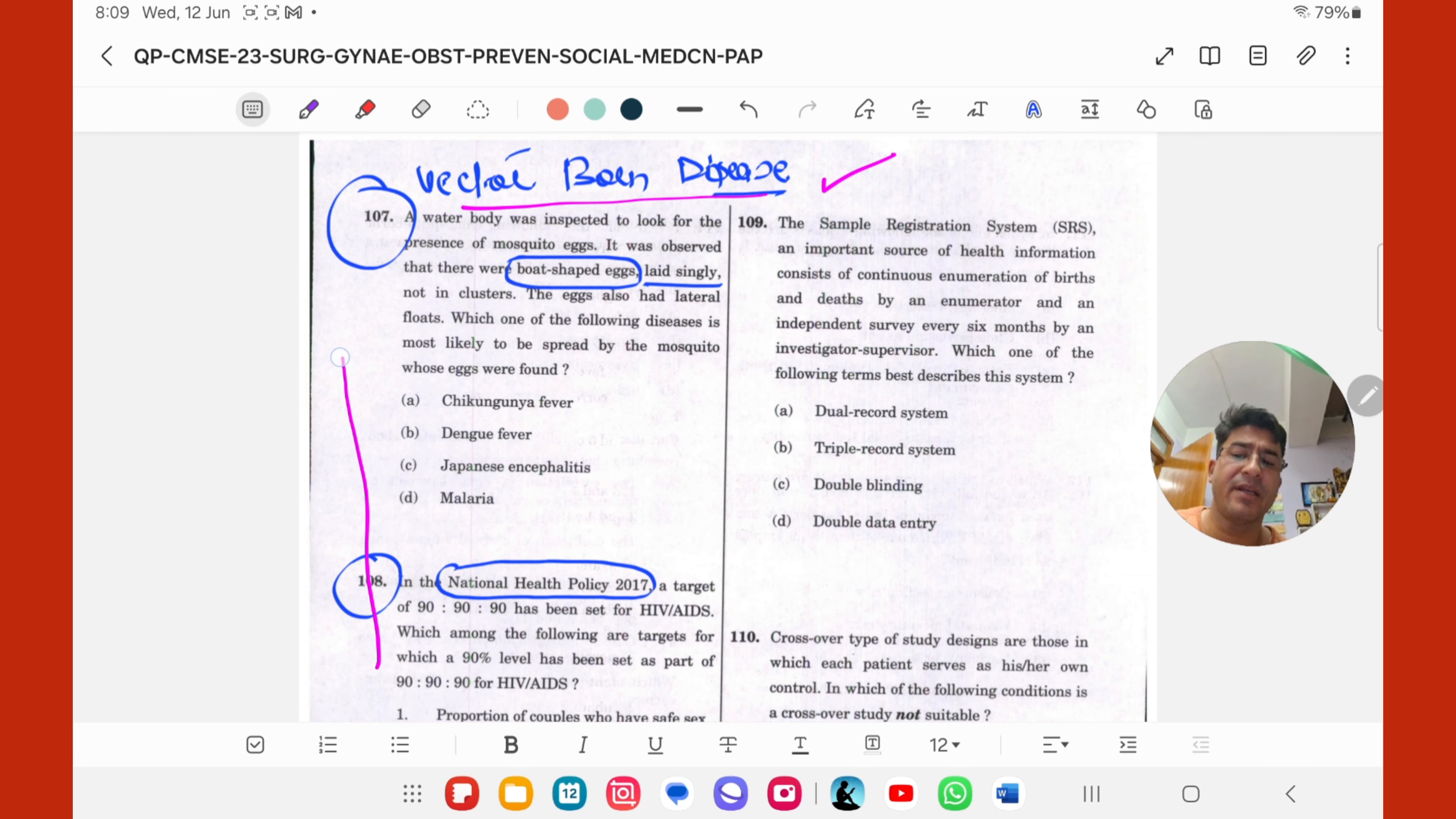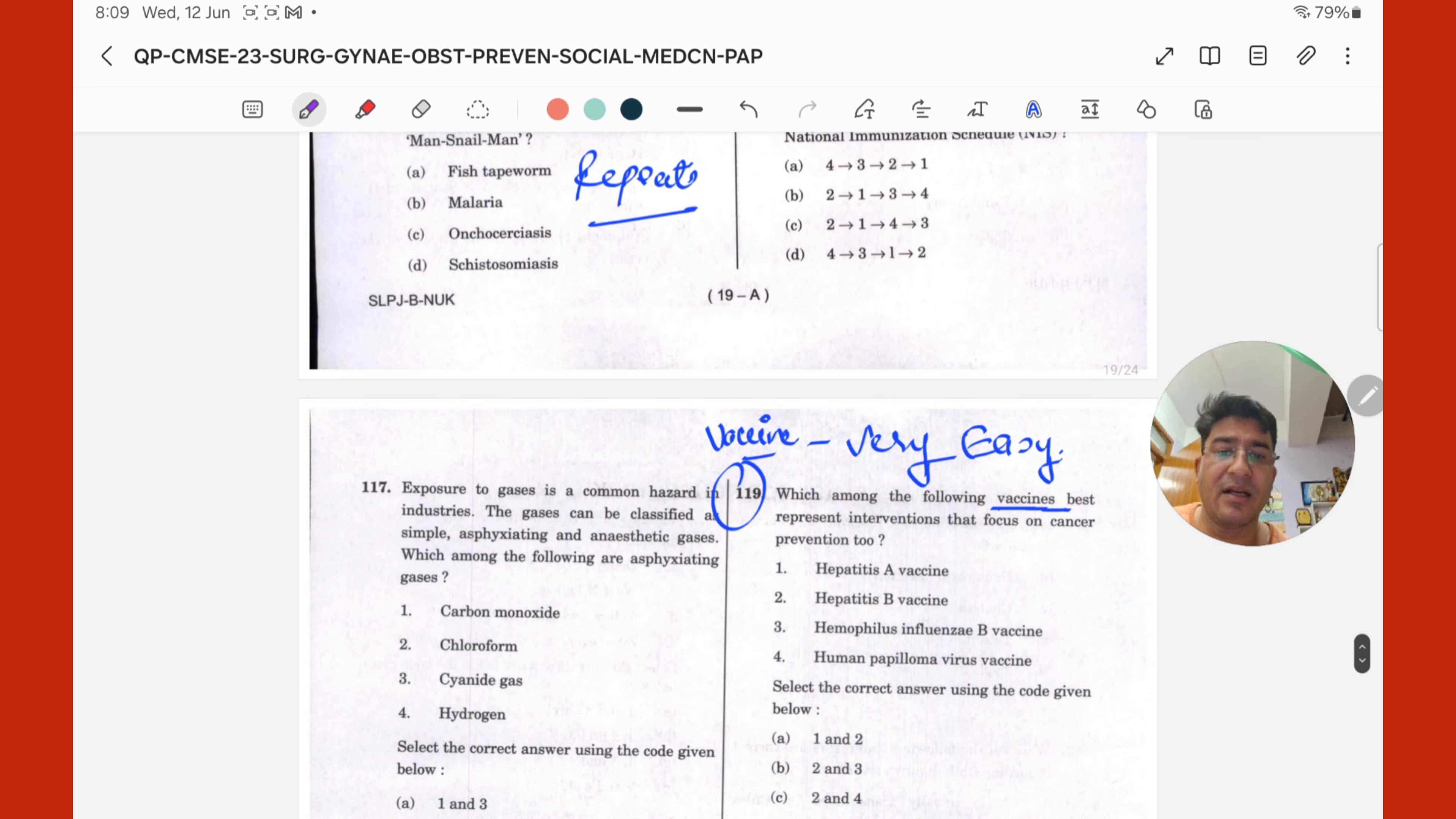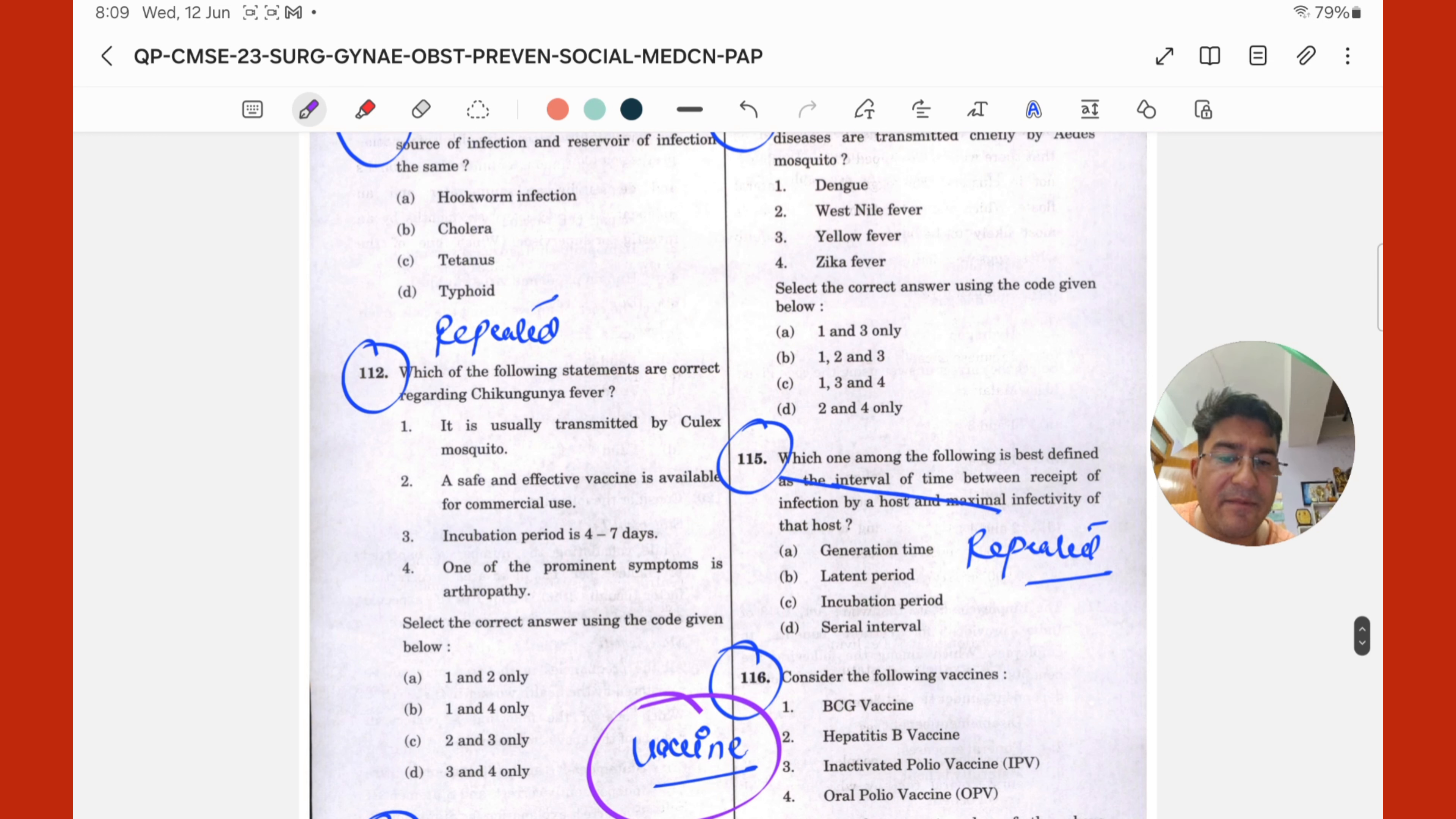Vector borne disease, aisa topic hai, jo question aana banta hi hai. Right? Aap dekho vector borne disease se yeh bhi question aaya. Vaccine, hai na, again, this is vaccine very easy. To aise question hai, kaafi MCQs repeat hue hai. To main basically aapko dikhana chah raha tha, ki generation time wala question kaha rahi ho, this is, this is generation time. To isme puchha gaya hai, interval of time between receipt of infection. Yani maine aapke yaad karaya jam. Jam bottle. G for generation time, E for entry, entry of organism, right? and M for maximum infectivity. So jam bottle is the mnemonic for generation time. Ho sakta hai aane wale time mein, aapse incubation period puch le, latent ya serial, whatever, kuch bhi aapse puchha sakta hai.